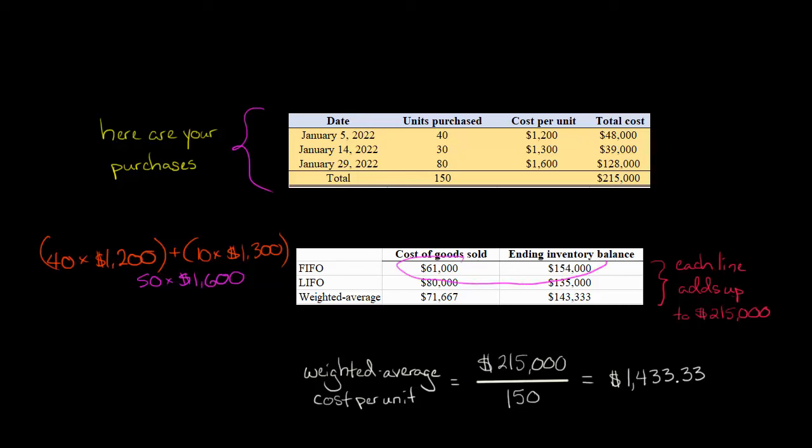And by the way, just to make sure you understand, each line is always going to add up to $215,000. I'm talking about each row here, because that's the total amount of cost. We're trying to figure out how much that $215,000 goes to COGS and how much goes to ending inventory balance. So $61,000 plus $154,000 is $215,000. $80,000 plus $135,000, that's $215,000.